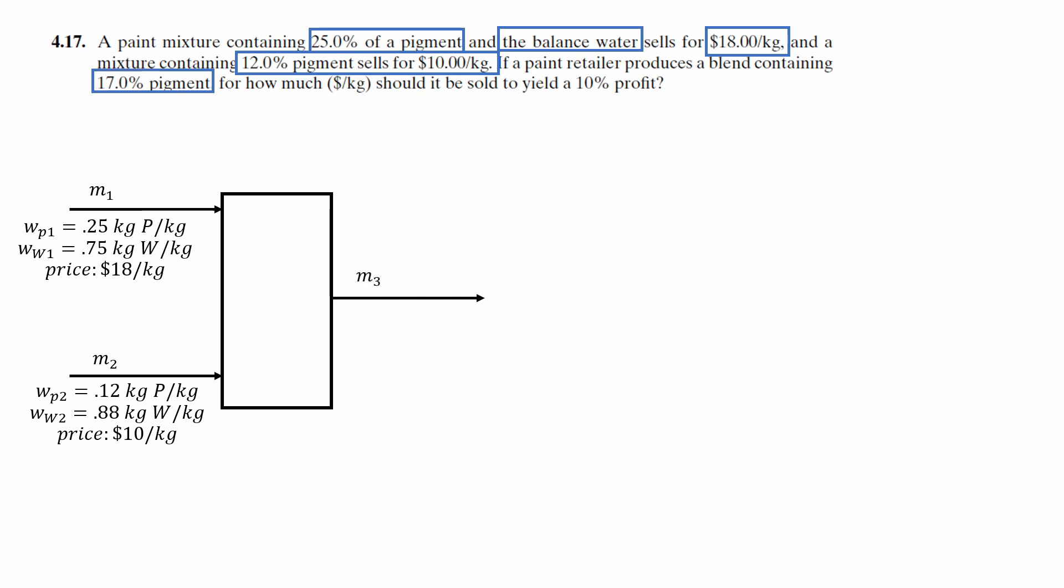And for our third stream, we'll label it as M3, which we have the mass fraction similarly at 17%, and the balance, which we can calculate again. But the price, we don't know yet. So what can we do?